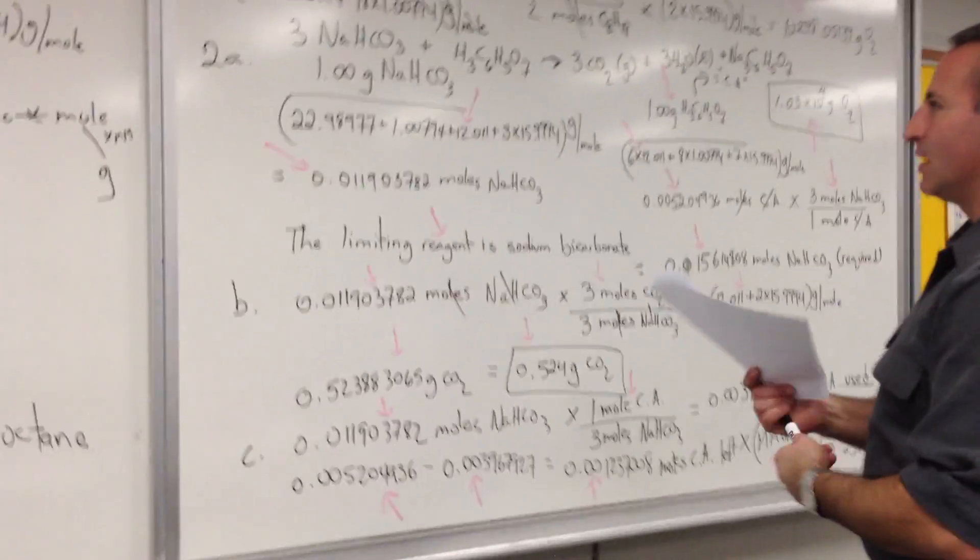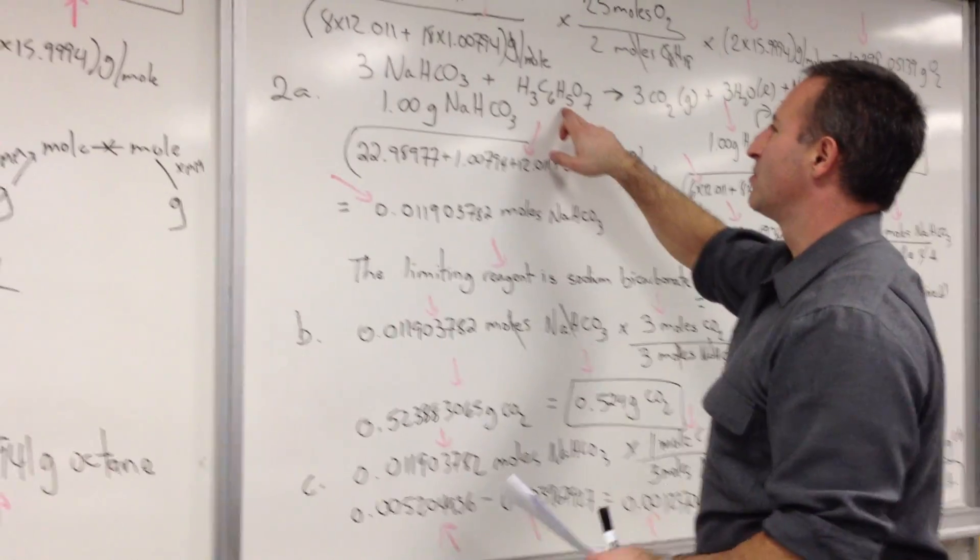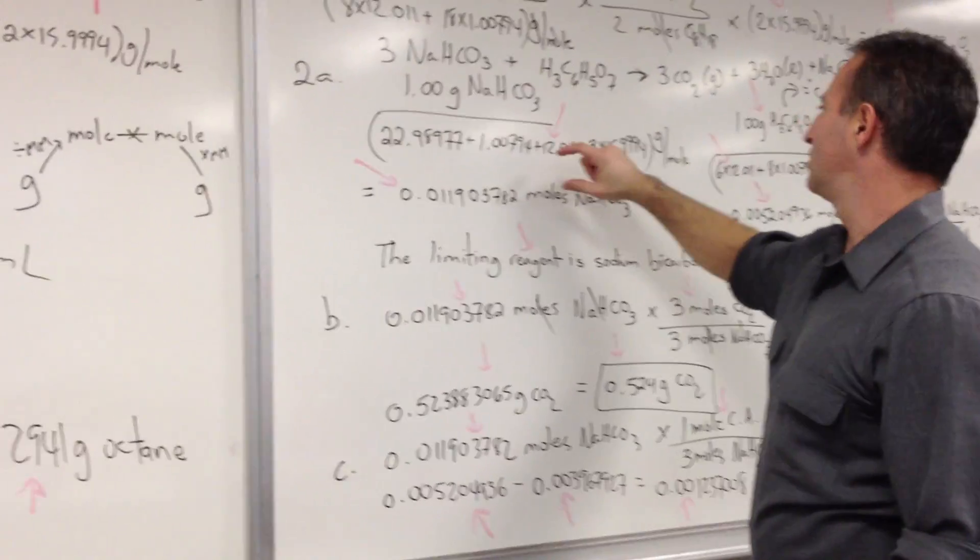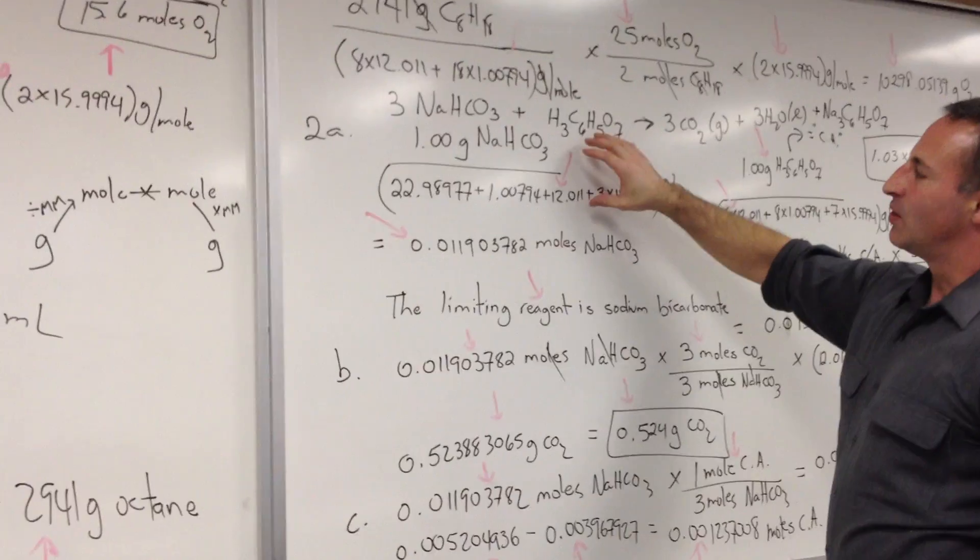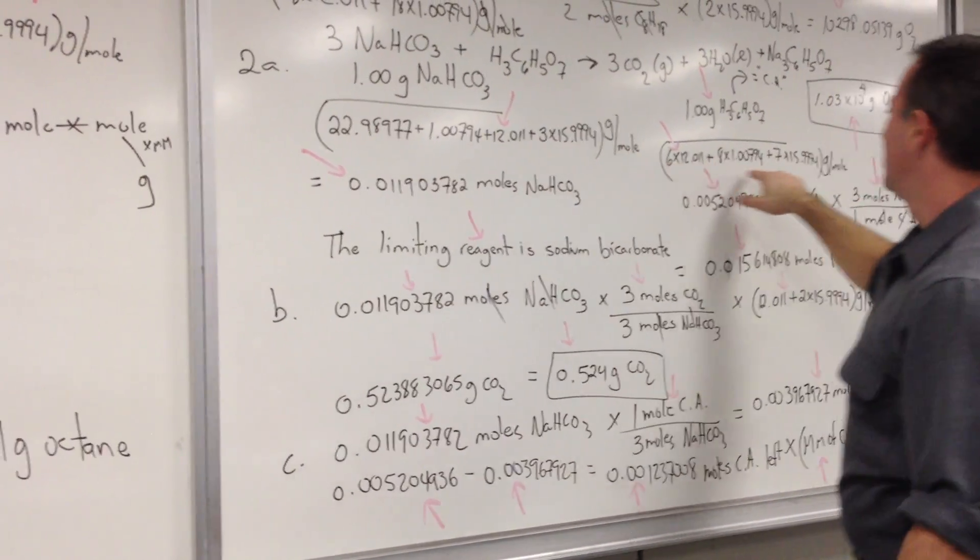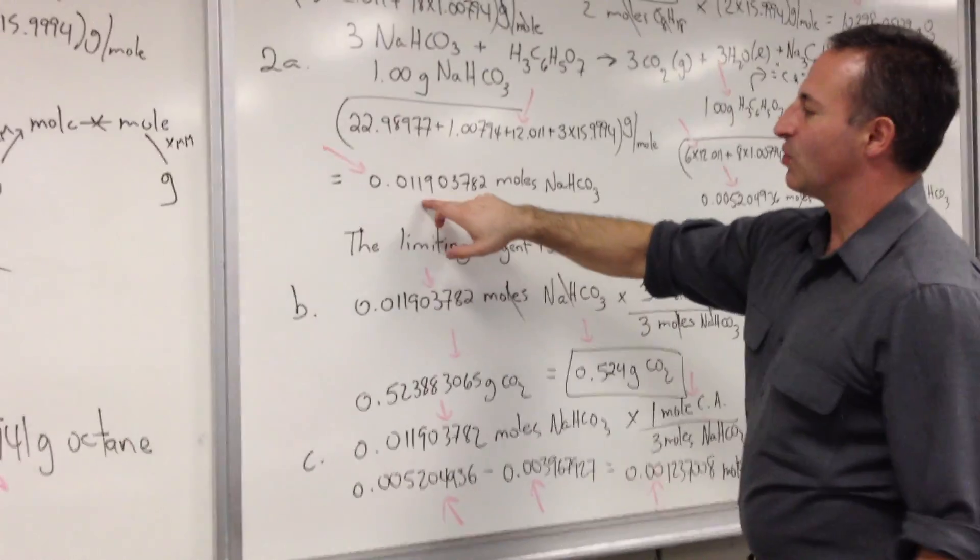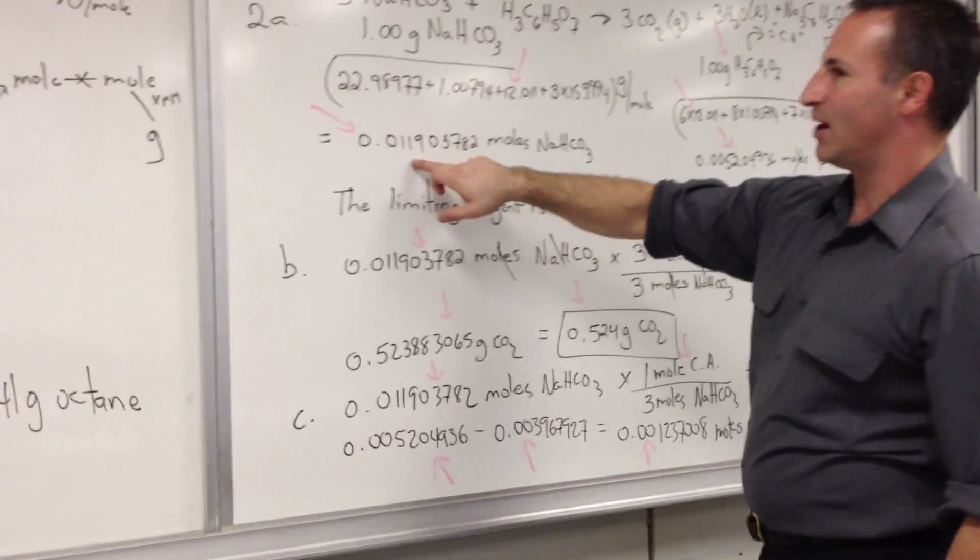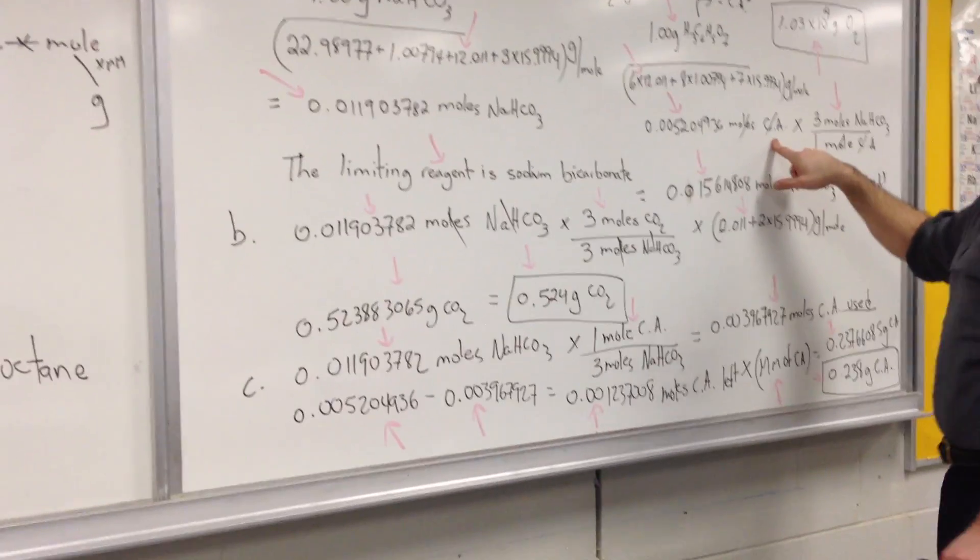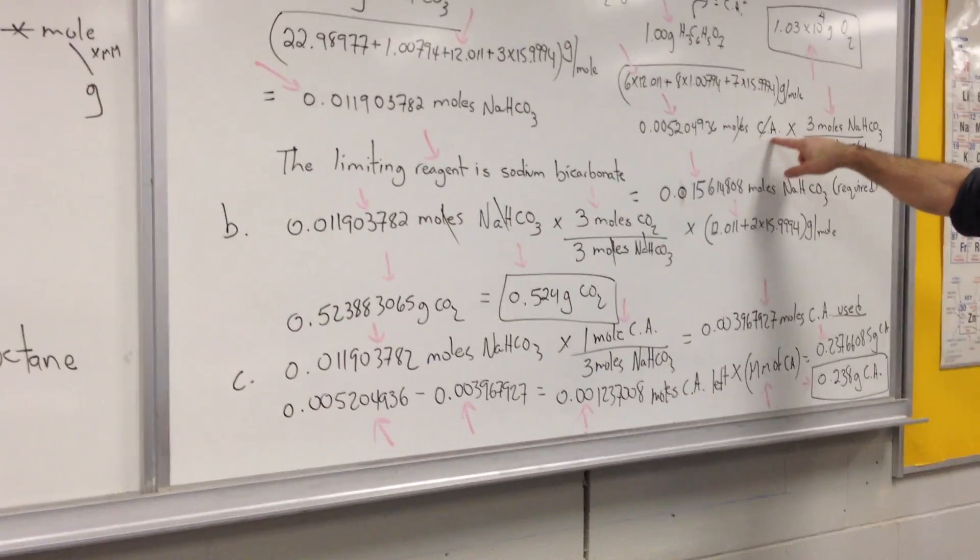So the stoichiometry is three to one to three to three to one. The question they ask here is, which one of these two is the limiting reagent? The sodium bicarbonate or the citric acid? So to calculate that, we know that we have one gram each. We divide by the molar mass of each. We find out that we have 0.011 gram moles of sodium hydrogen carbonate and 0.005 moles of citric acid, which I symbolize as CA.